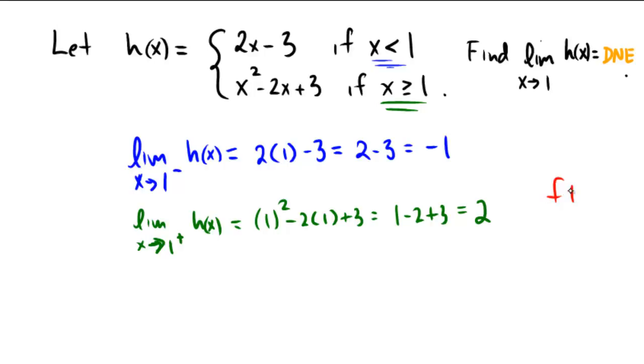Curiously, f(1) does exist. 1 is bigger than or equal to 1, so it would be telling us to follow the bottom rule. And as we saw down here, when we plugged in actual 1, we get the value of 2. So the functional value exists, but the limit doesn't, because there's a different limit from the left and from the right.